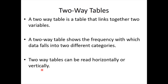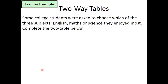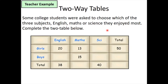Let's take a look at an example. Some college students were asked to choose which of three subjects — English, maths, or science — they enjoyed the most. We need to complete the two-way table below. Looking at it vertically, I can see English, maths, science, and the total.